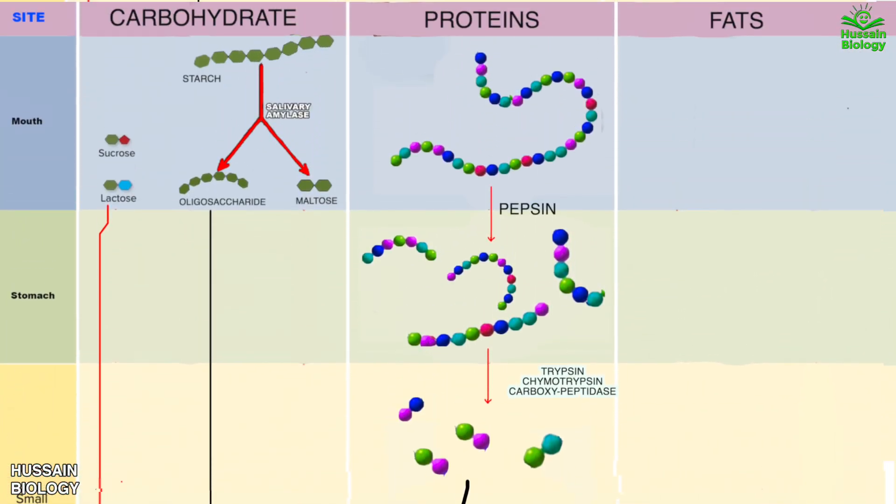Now getting to the fats. Here in this diagram we have the fat in the food which gets into the small intestine and is acted upon by pancreatic lipase. And we get the monoglycerides or the free fatty acids as shown in the diagram.